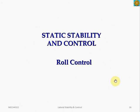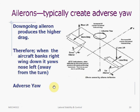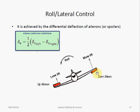Let's shift our discussion to roll control. Roll control is achieved by differential deflection of the ailerons — one aileron goes up while the other goes down — creating a rolling moment. When the aileron is deflected upwards, it decreases the lift on that wing; when deflected downwards, it increases the lift. The difference in lift on the left and right wings creates the rolling moment.